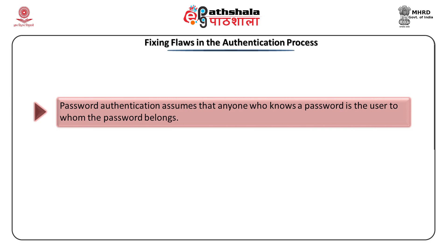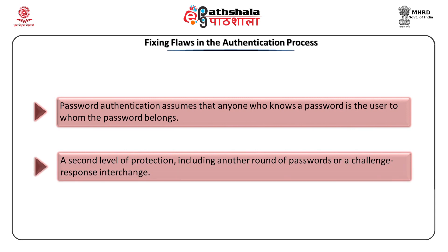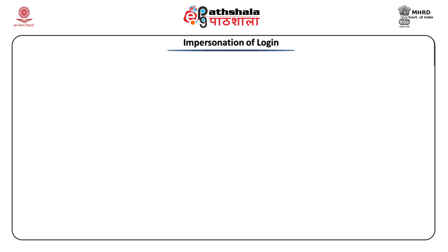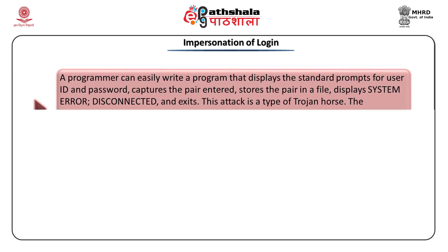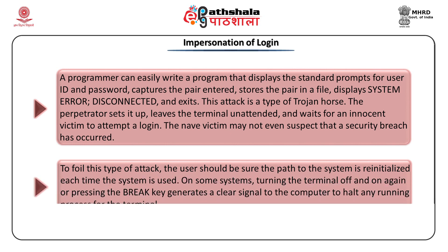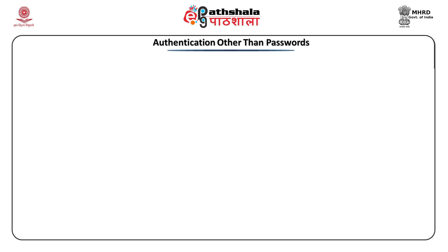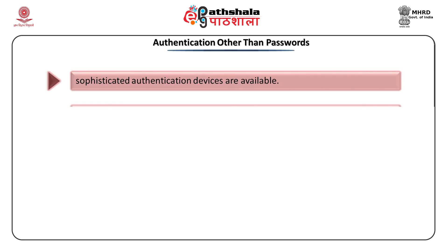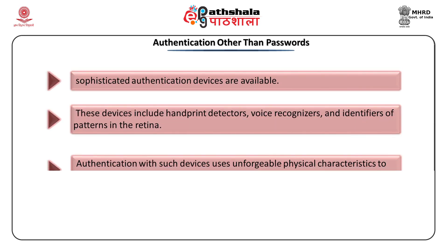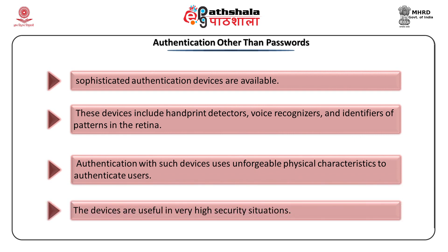The password can be considered a preliminary or first-level piece of evidence, and there are several ways to provide second-level protection. There should also be a challenge-response method. Impersonation authentication of login: the system demands identification from a user, but the user is also supposed to trust the system. Authentication other than passwords may include devices such as handprint detectors, voice recognizers, and identifiers of the patterns in the retina.